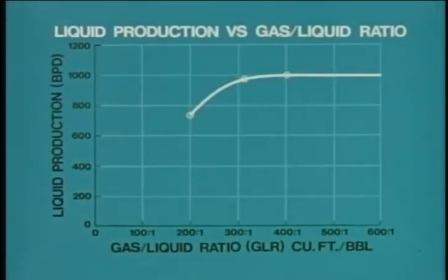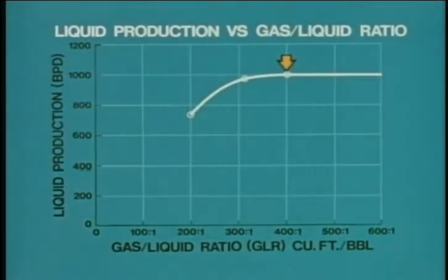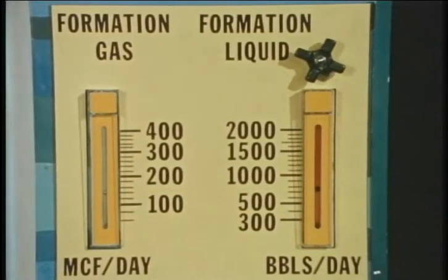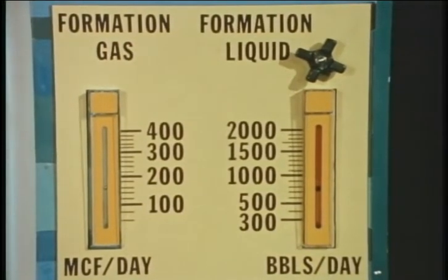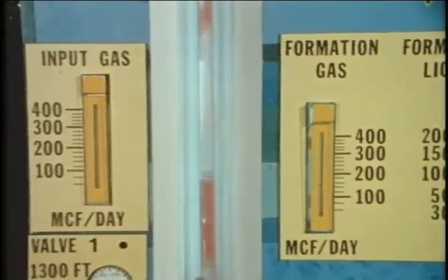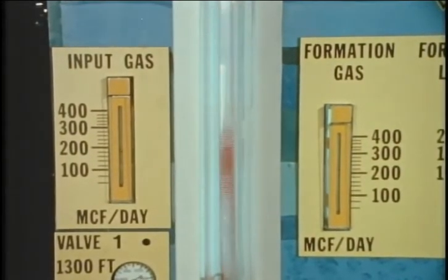Now let's consider injected gas. If we assume that the model has shown us an example of a flowing well's normal decline in liquid as the amount of formation gas declines, then it follows that if the gas to liquid ratio could be held steady at the higher rate, then liquid production would also be steady at the higher rate. The present gas rate of 150 mcf per day is producing 750 barrels per day — a 200 to 1 gas liquid ratio. We will use the gas lift valves to add 200 mcf per day to bring the total gas rate back up to the original rate of 400 mcf per day.